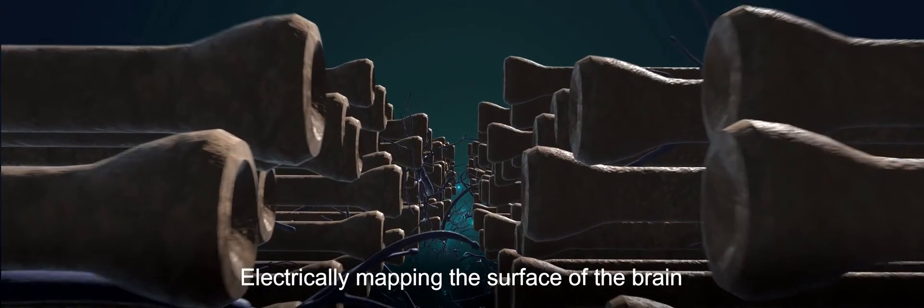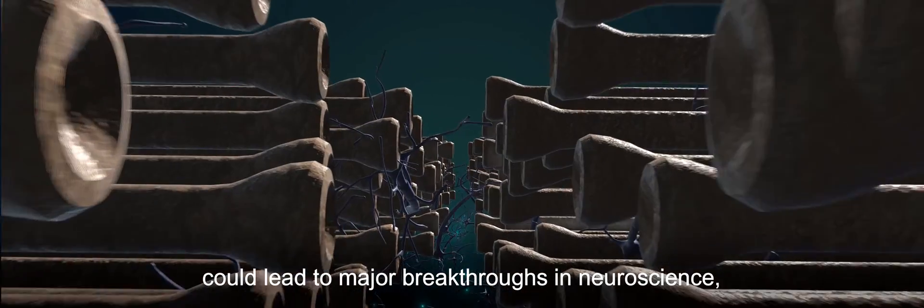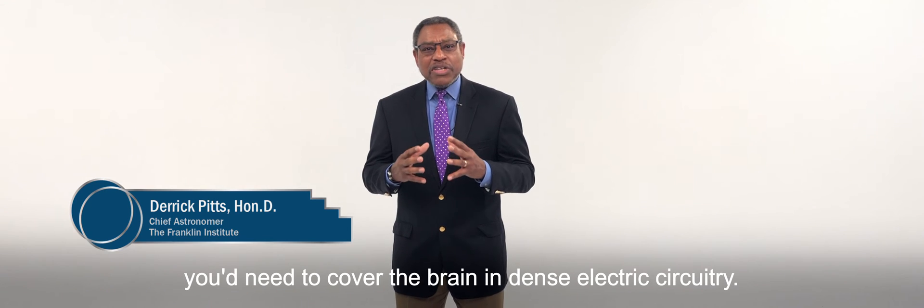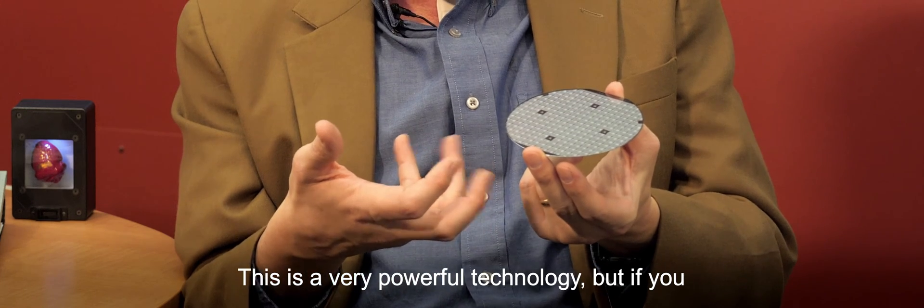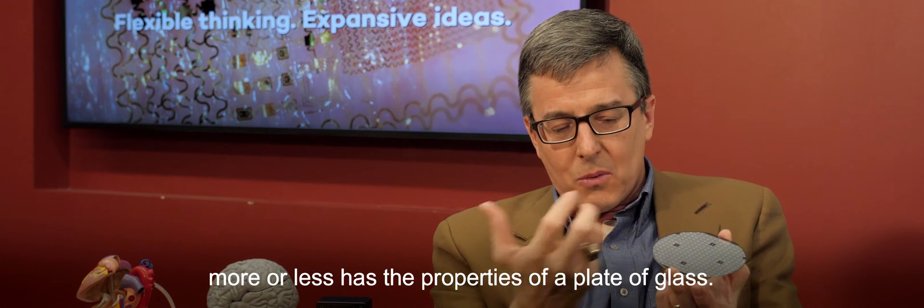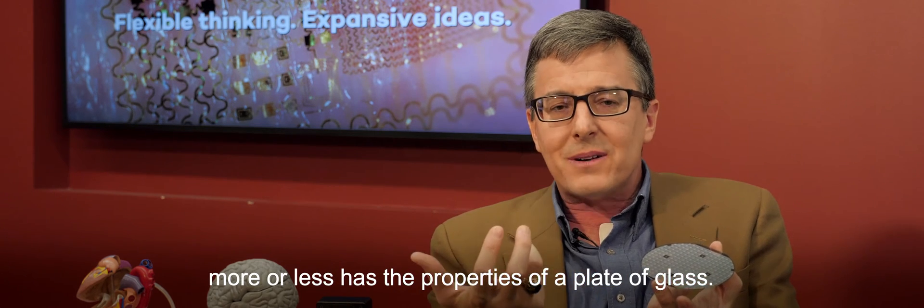Electrically mapping the surface of the brain could lead to major breakthroughs in neuroscience, but to do it, you'd need to cover the brain in dense electric circuitry. Rigid silicon microchips just wouldn't work. This is a very powerful technology, but if you take a look at it, it's built on a substrate that more or less has the properties of a plate of glass.